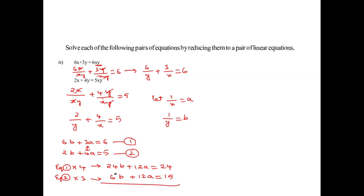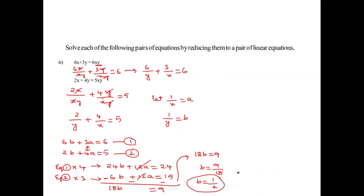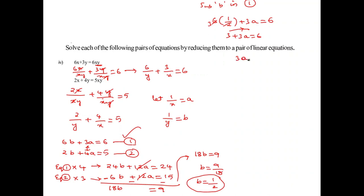So 18B equals 9, giving B equals 9 by 18 equals 1 by 2. Substituting B equals 1 by 2 into equation 1: 6 times 1 by 2 plus 3A equals 6. That gives 3 plus 3A equals 6. Shifting: 3A equals 3, so A equals 1.